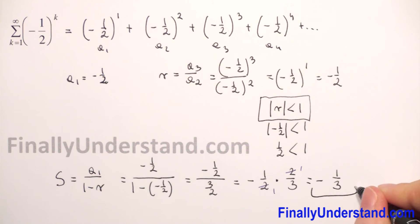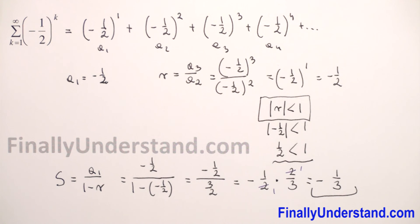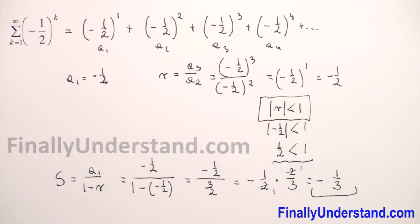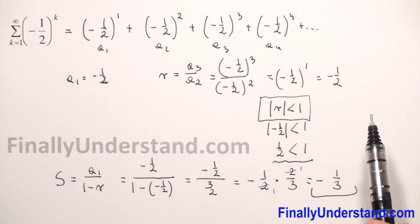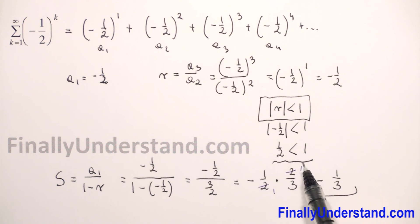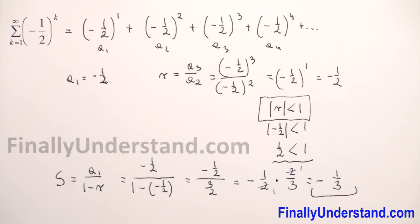We found the sum of our infinite geometric series. The series is geometric with a1 equals negative 1 half and r equals negative 1 half. Because the absolute value of r is less than 1, the series converges and the sum is equal to negative 1 over 3.